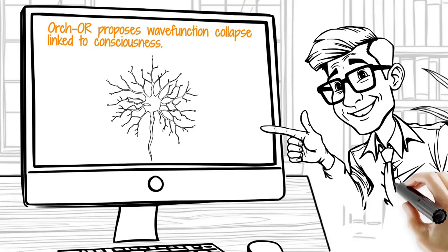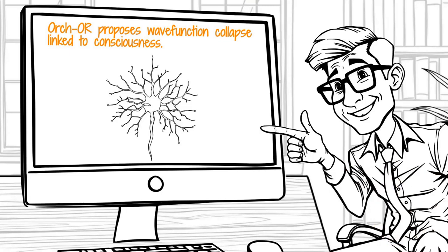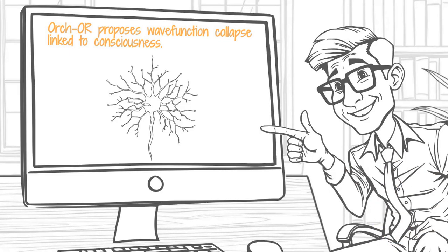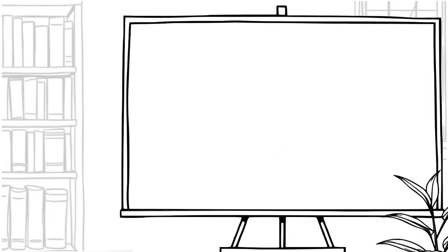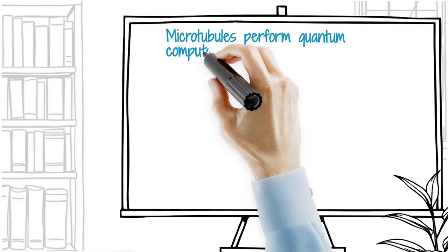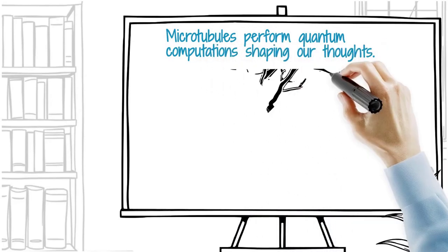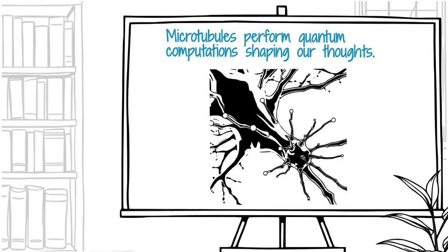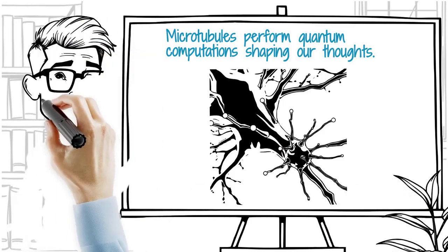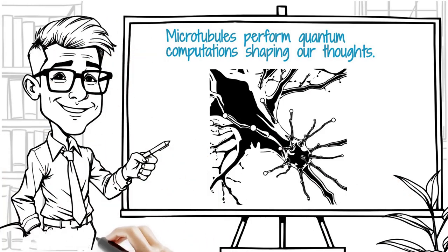If true, this theory would redefine consciousness as an emergent quantum property of matter. According to Orch-OR, decision-making and awareness arise from quantum computations in microtubules that collapse into definite outcomes. It's like your thoughts are not just electric pulses, but shimmering quantum ripples collapsing into meaningful moments.